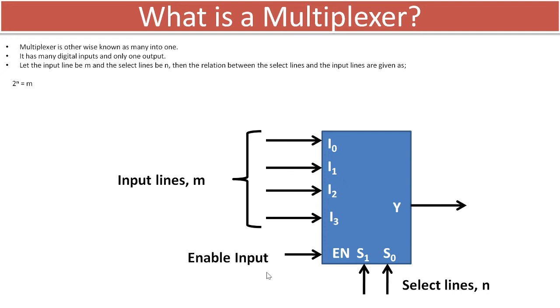This enable input can be active low type as well as active high type. In most cases we prefer active low type enable input. It has utility where we can reduce the fan-out problem that we will discuss in the lecture related to TTL and CMOS.